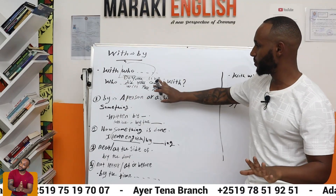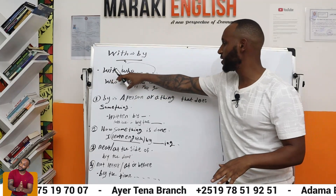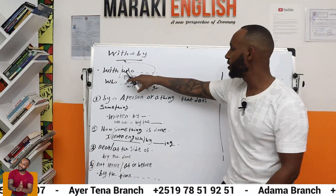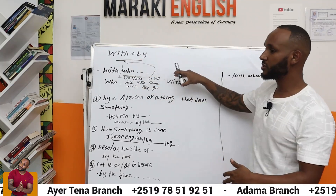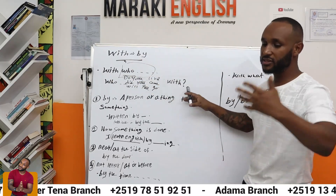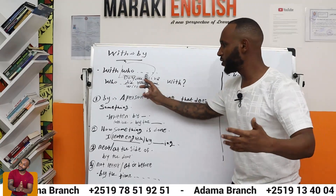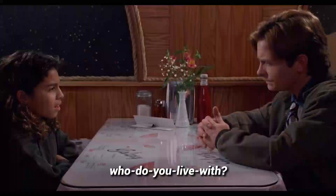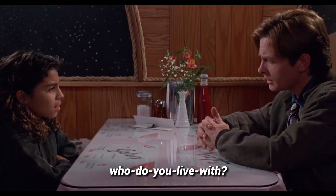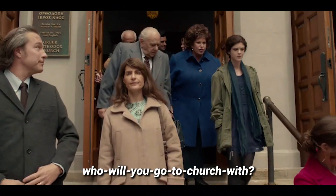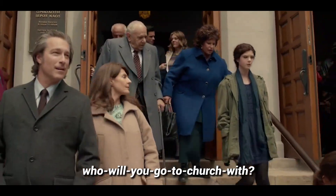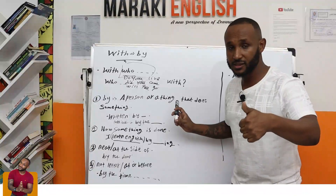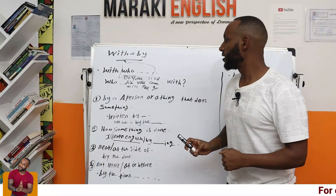So if you understand this, from now on we don't say 'with who do you live' or 'with who do you want to start a business?' No. We say: 'Who do you want to start a business with?' 'Who do you live with?' 'Who would you go to church with?' 'Who did you come with?' This is how we say it.